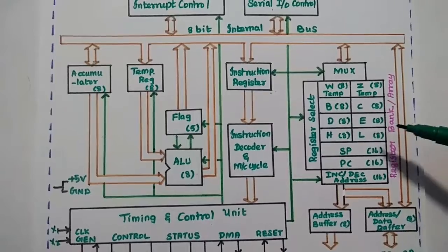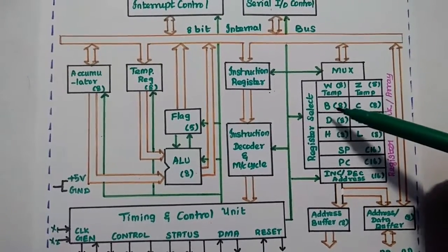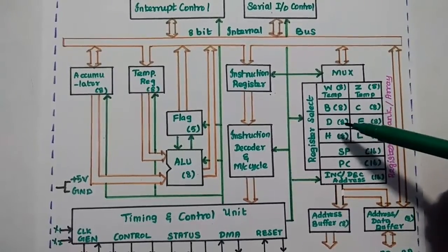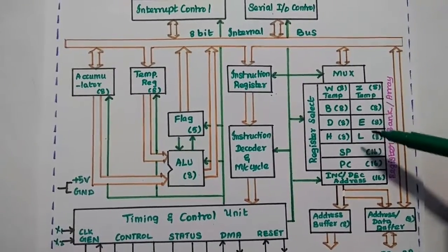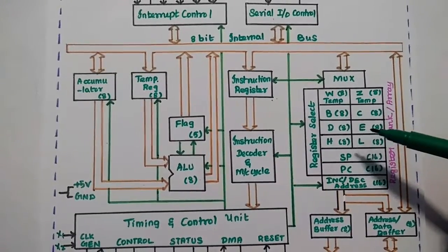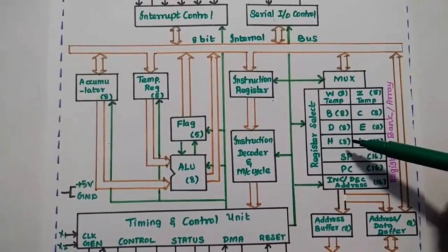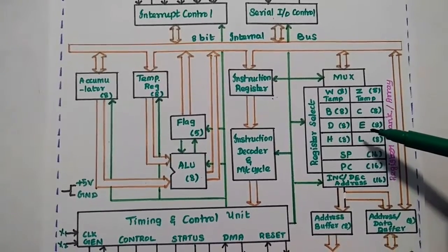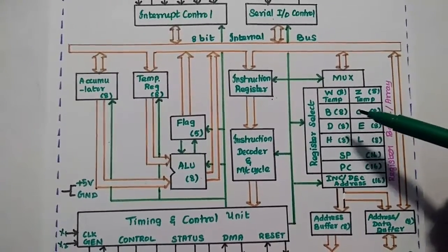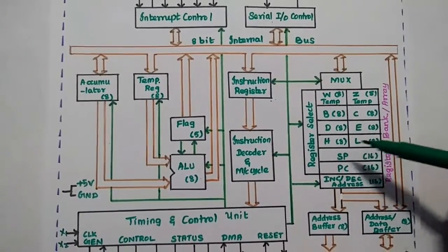The register array is a very important component. It has 6 general-purpose registers: B, C, D, E, H, and L. Each is an 8-bit register, but they can be used as 16-bit registers by pairing them. Valid pairs are BC, DE, and HL.